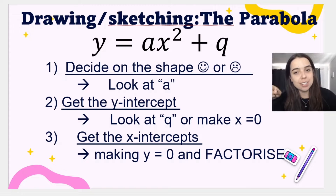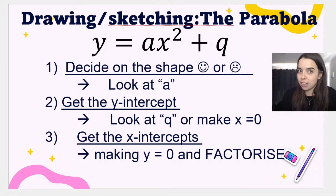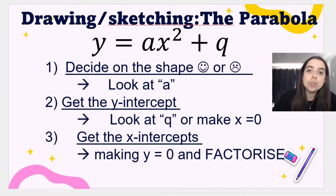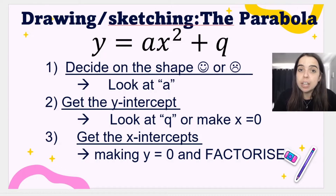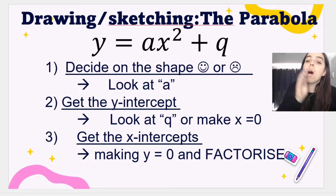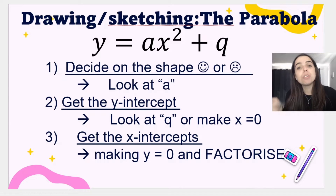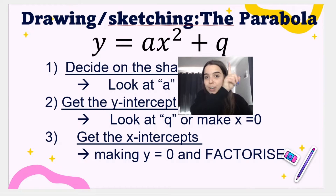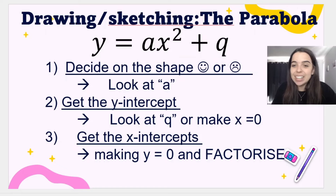Talking about intercepts — these are very important when sketching any graph, and you should know that from the linear graph you covered in Grade 9 and Grade 10. The y-intercept is where my graph cuts the y-axis. The x-intercept, or potentially x-intercepts, is where my graph cuts the x-axis. To find the y-intercept, we make x equal to 0. To find the x-intercept or intercepts, we make y equal to 0 — it's always the opposite. The nice thing about the y-intercept is that we can almost always read it directly off the graph.